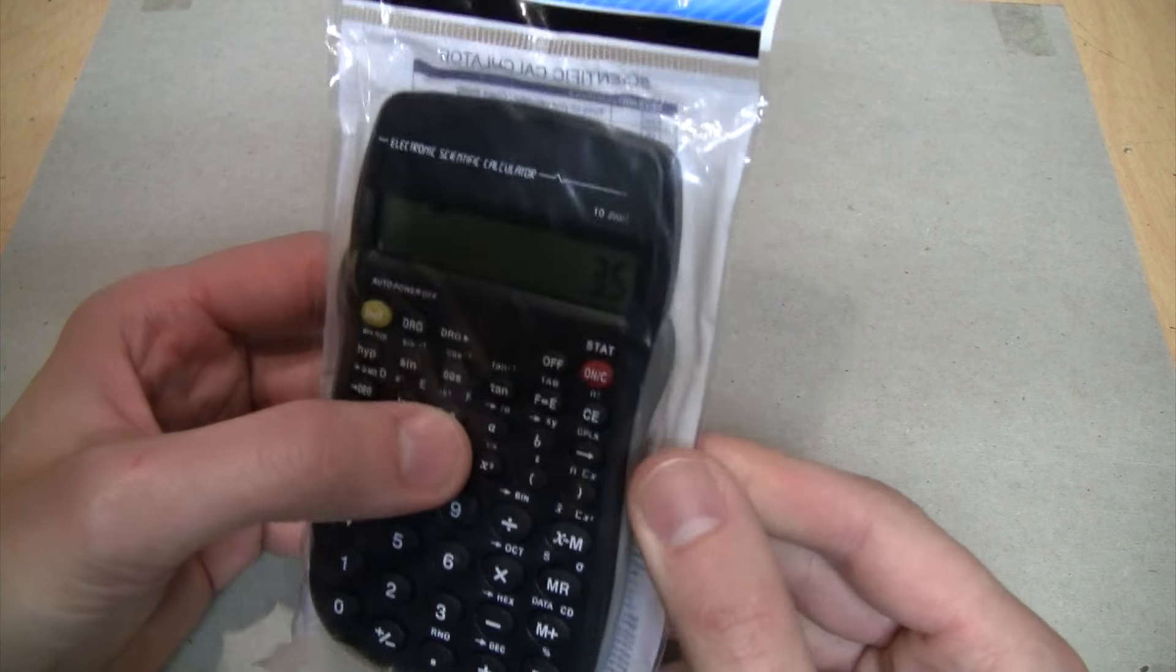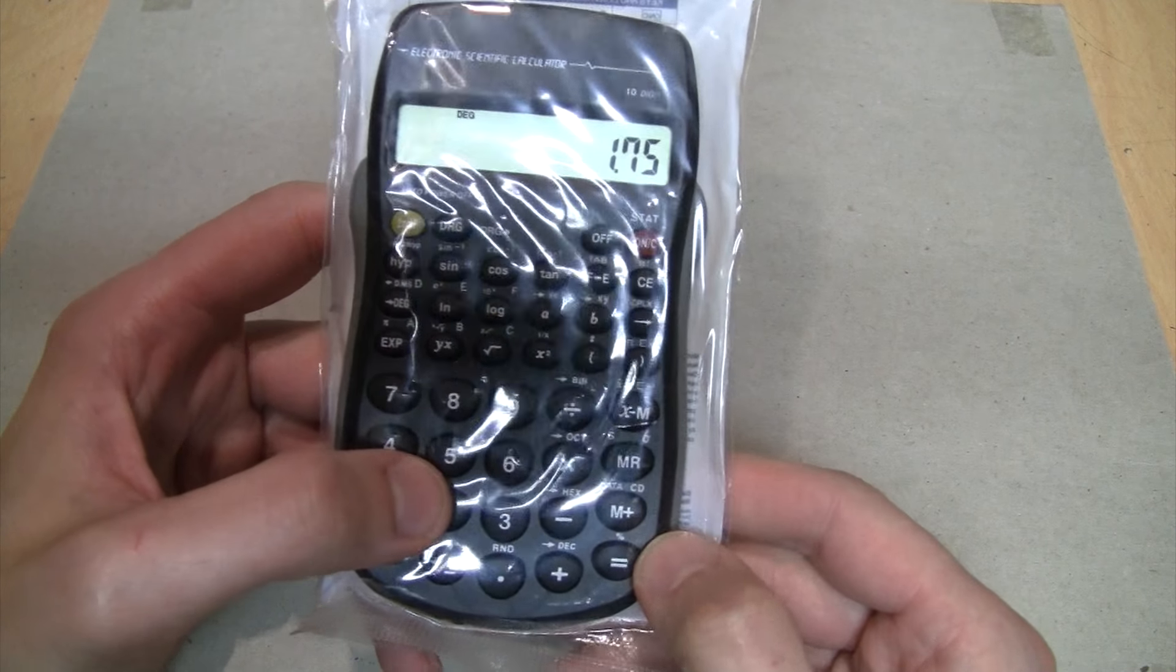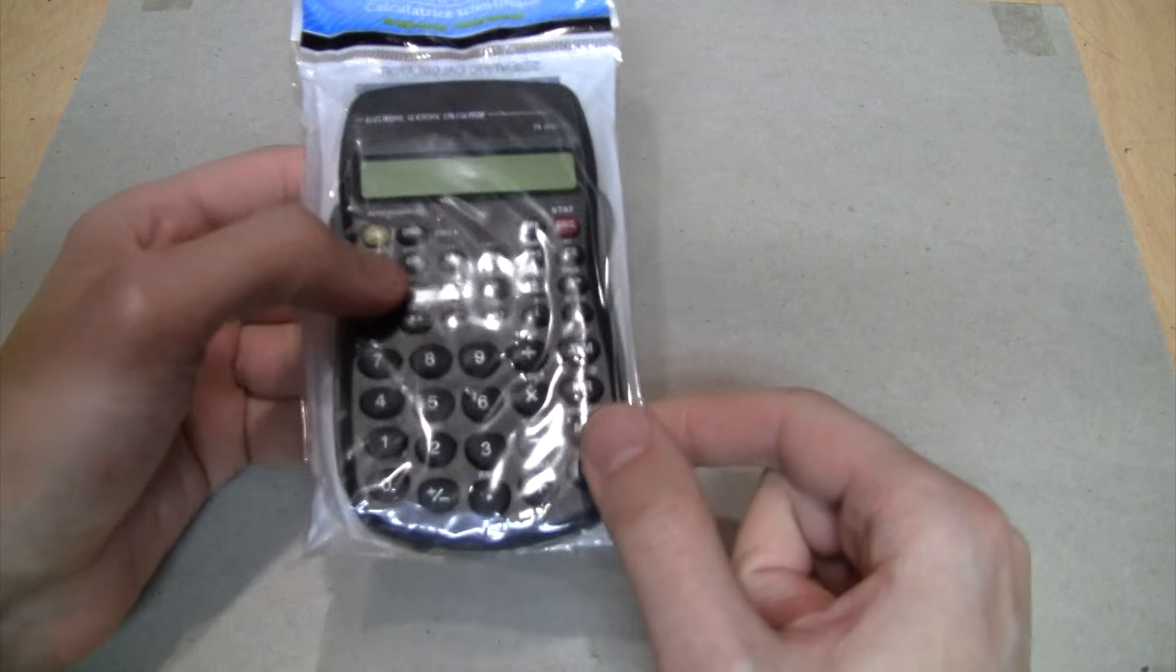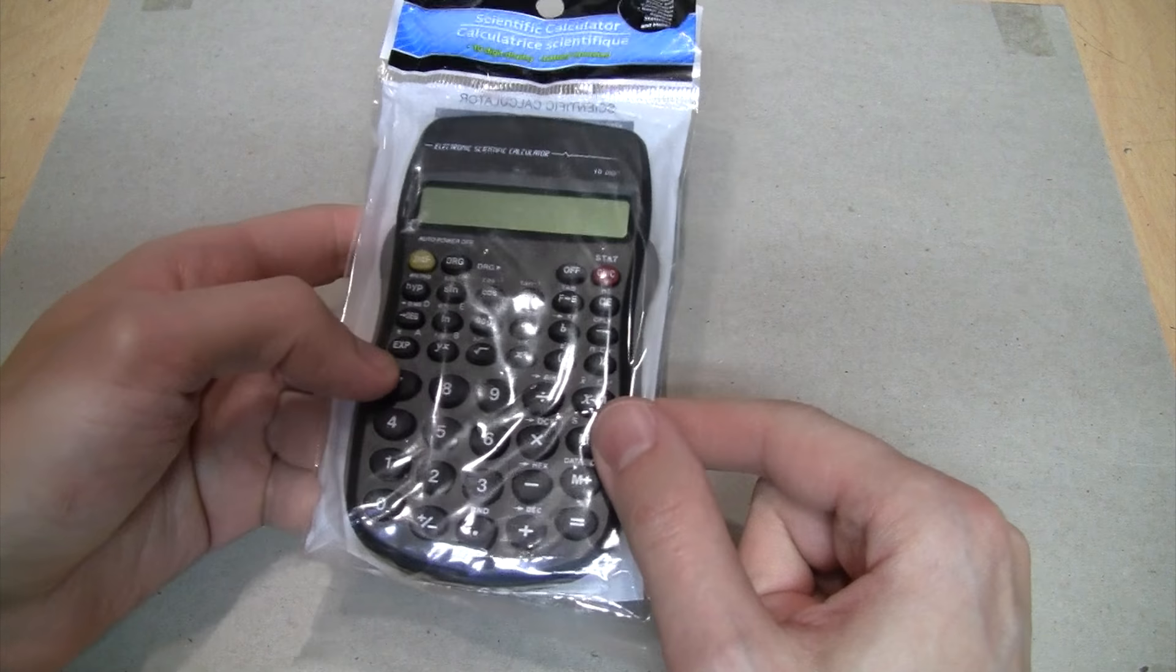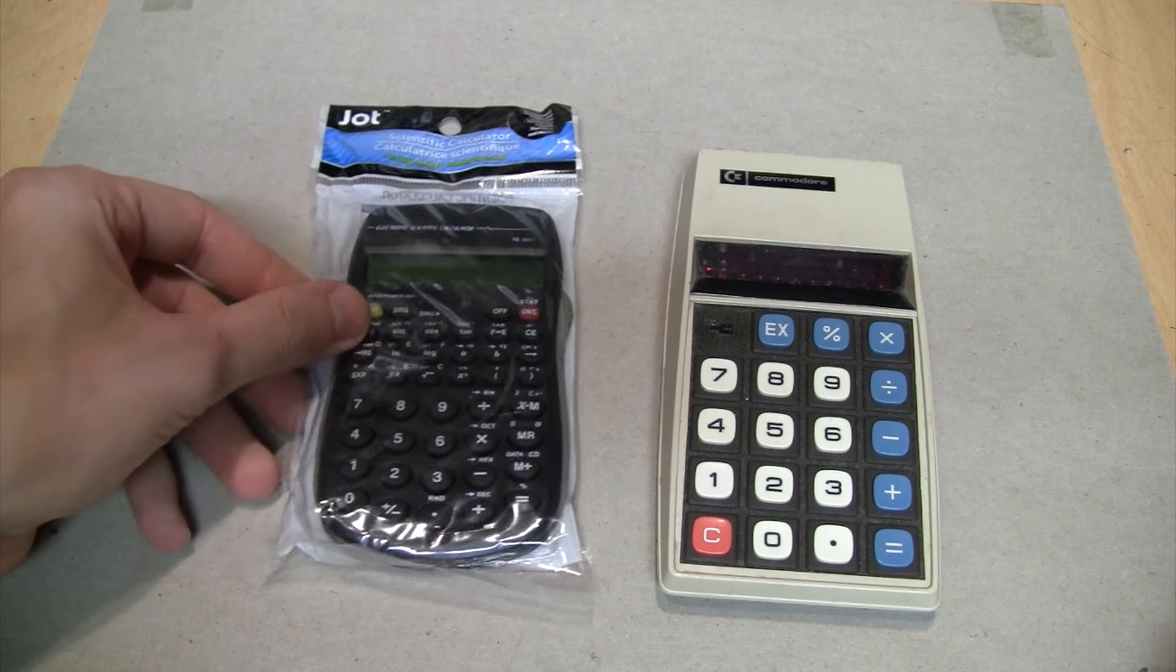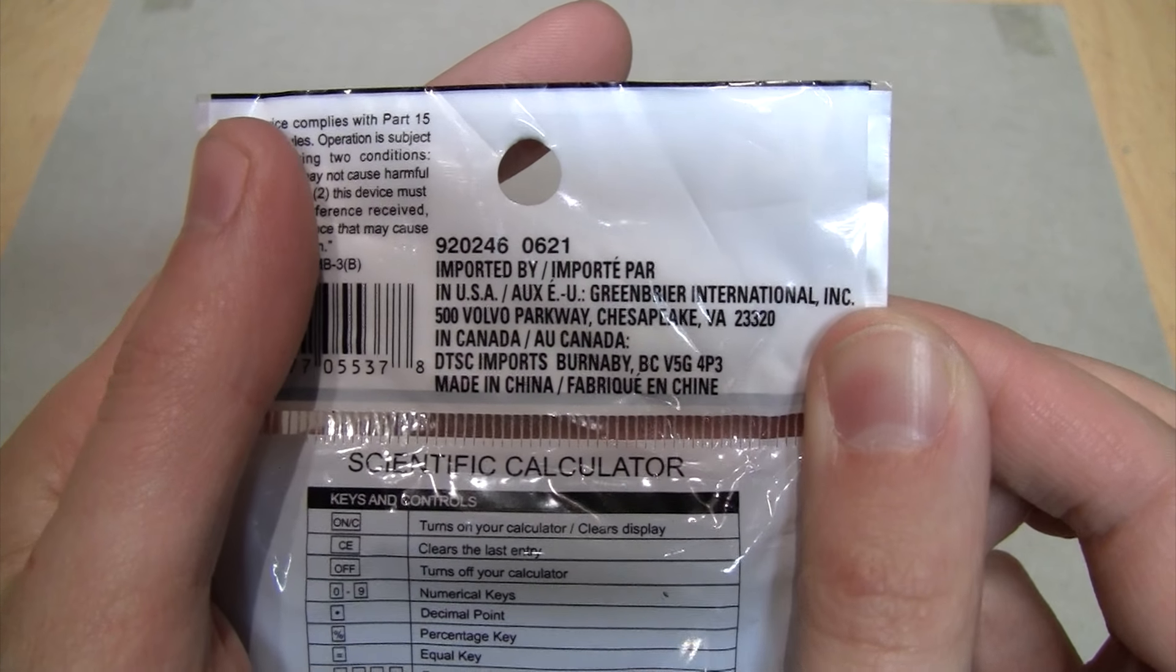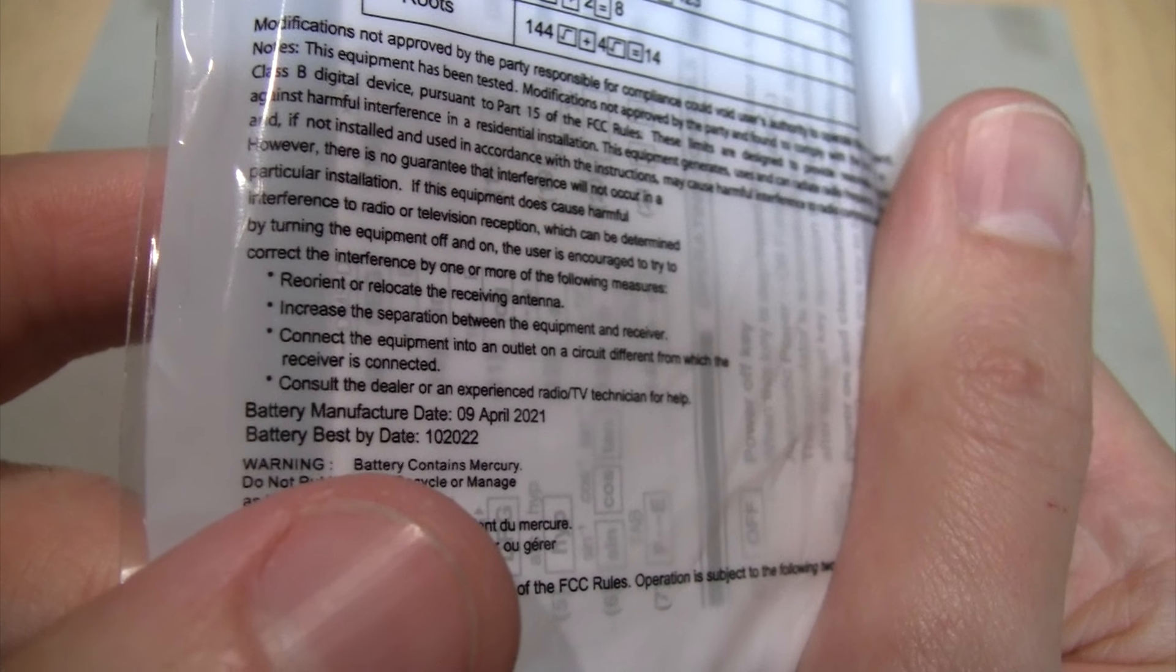If you ever have some important calculations to do and you don't have a calculator on hand, just stop by your local Dollar Tree. You can use this all you want. I mean, there's usually only one or two employees in the entire store, so they probably have more important things to do than try to kick out people using their calculators. So you can just camp out in Dollar Tree and do your math homework, and when you're done just put it back on the shelf. It has to be probably the smallest scientific calculator I've ever seen.